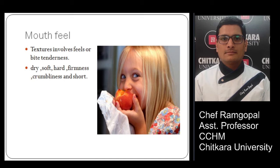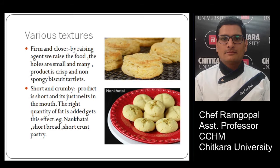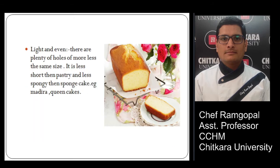Those are the four important areas of texture. Apart from these, there are also different types of textures. Firm and close: by using a raising agent, the holes are small and the product is crisp and non-spongy, like biscuits and tartlets. Short and crumby: the product melts in the mouth — the right quantity of fat added achieves this effect, for example nankhatai, shortbread, and shortcrust pastries.